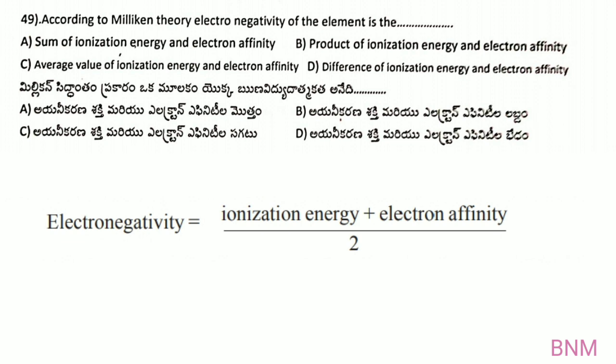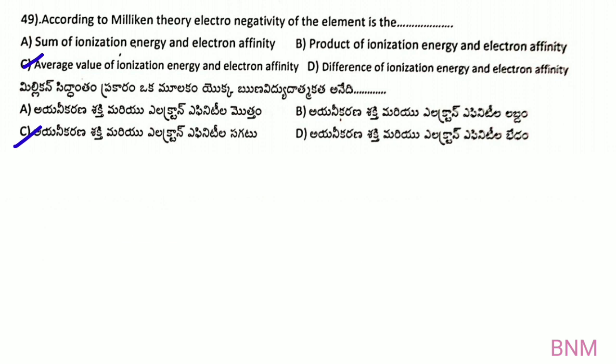This is the formula of electronegativity: (electron affinity + ionization energy) divided by 2. The average value of ionization energy and electron affinity gives the electronegativity.